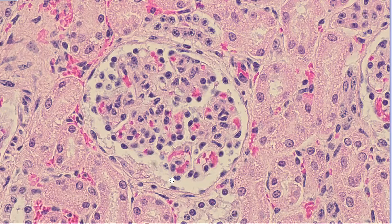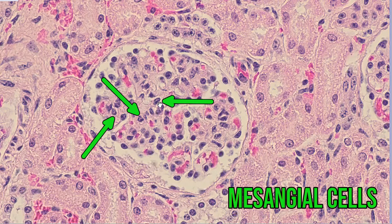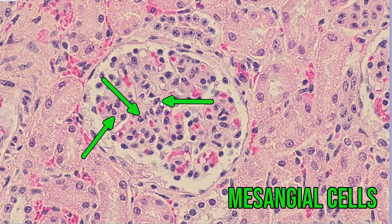Mesangial cells are going to be more difficult to pick out, since we don't really know whether this nucleus here is on the edge of a capillary space or whether it's forming part of the interstitium. But this could possibly be a mesangial cell.